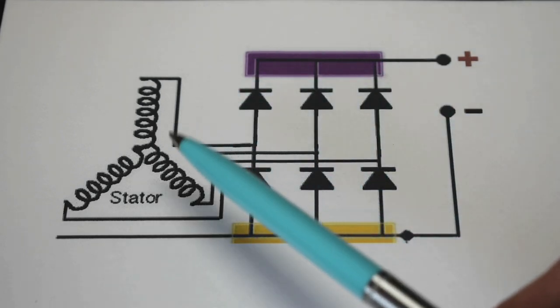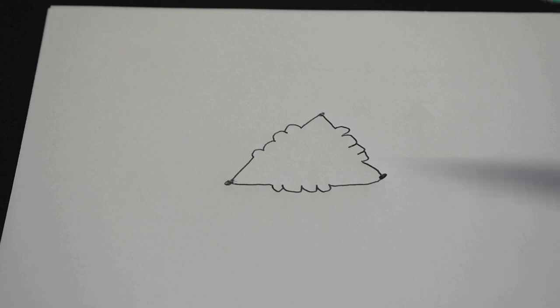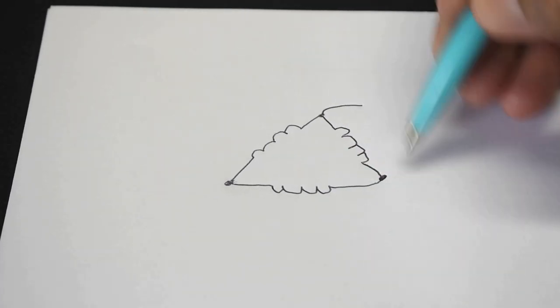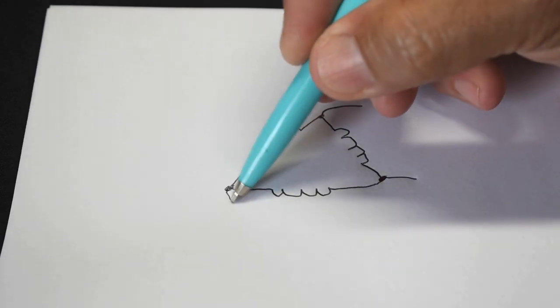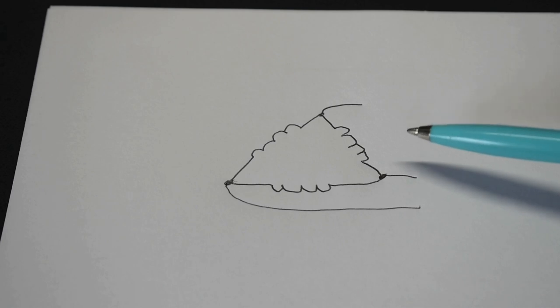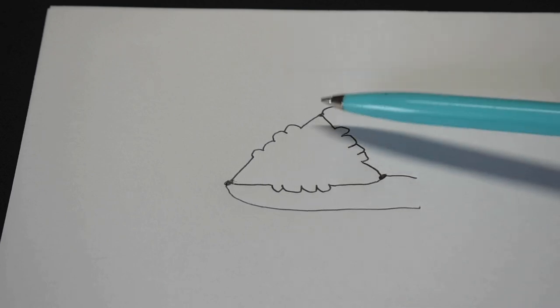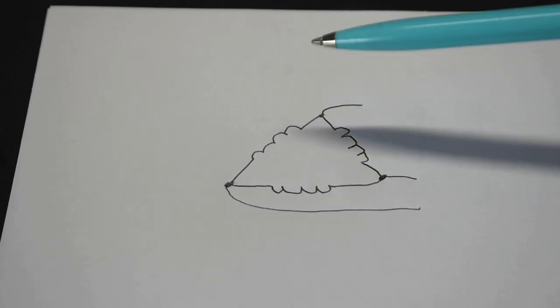Just to show you if it's not a star configuration, a delta configuration looks like what you see right here. Instead of having all three windings connected at one point. Here you have one winding, two winding, three windings. And then you would have your outputs like this. That would be delta. There are differences between the two configurations. And normally or typically you would find the delta configuration in generators.